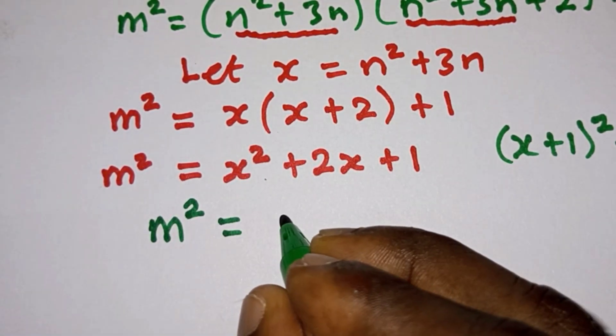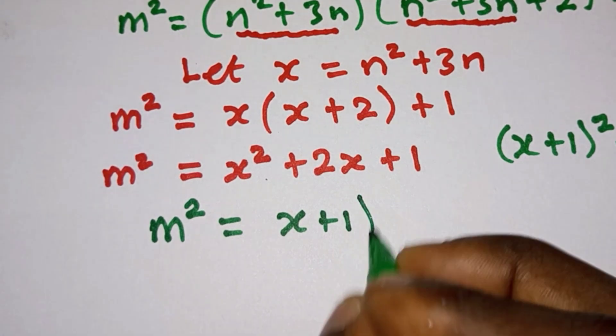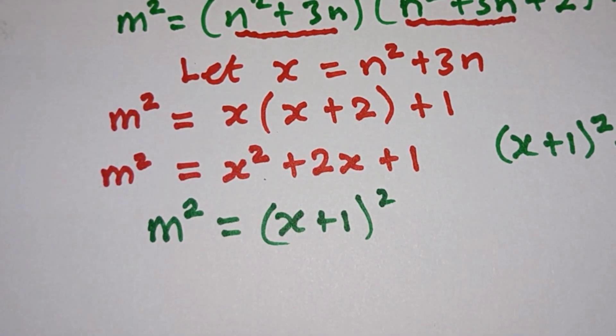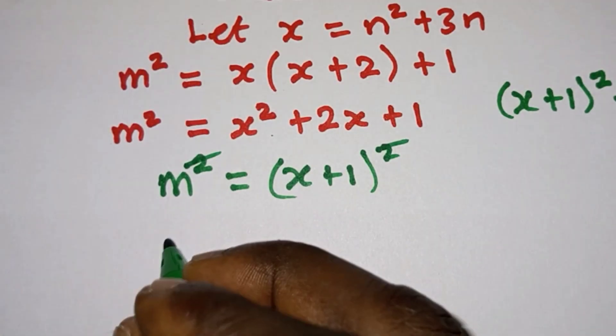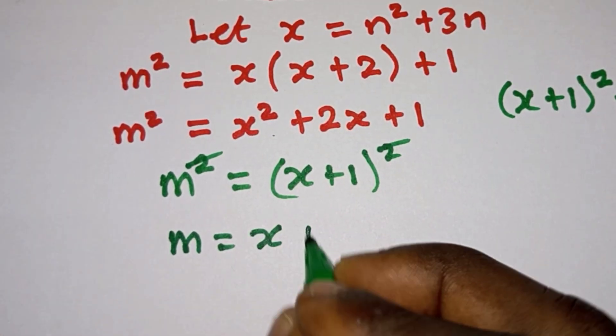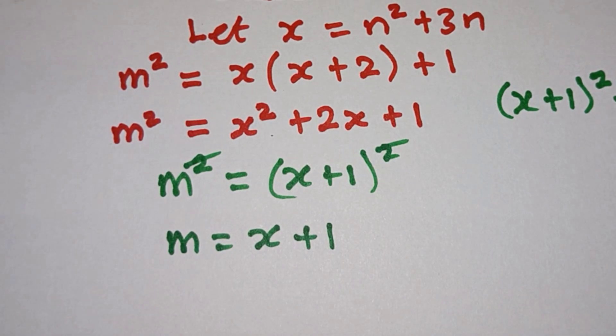So we're gonna have m² = (x+1)², and straight away we see that this square and this one will cancel and we have m = x + 1. But remember that we let x equal to something.